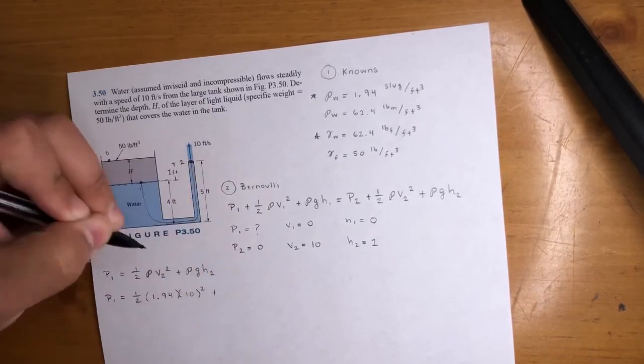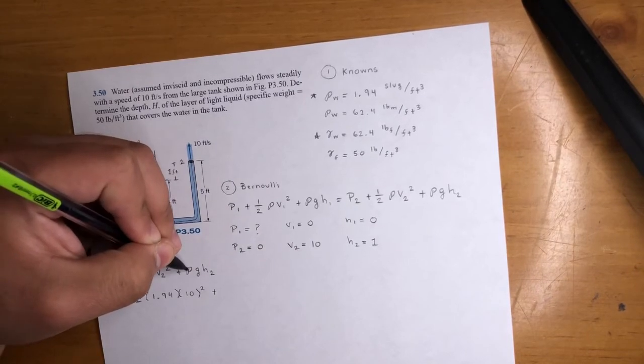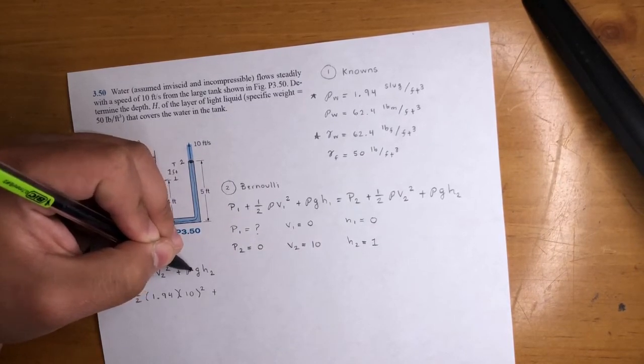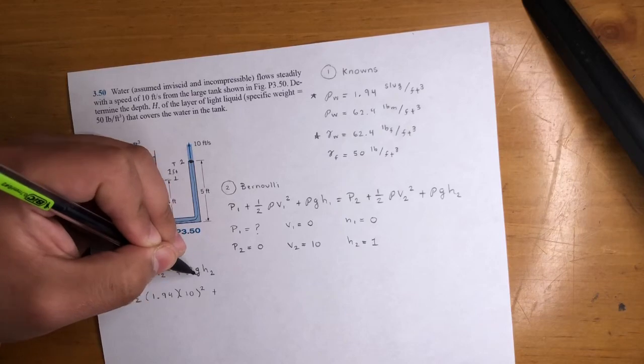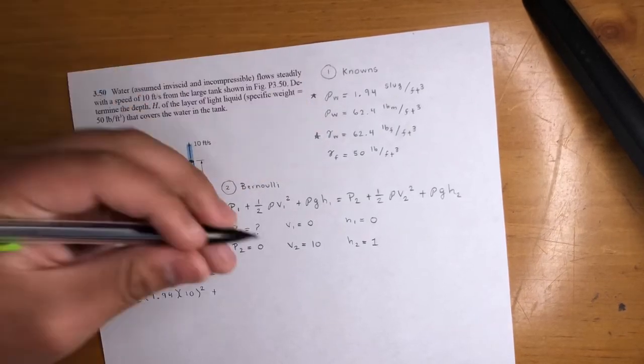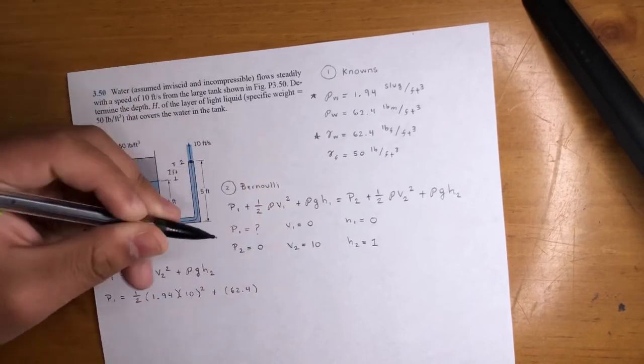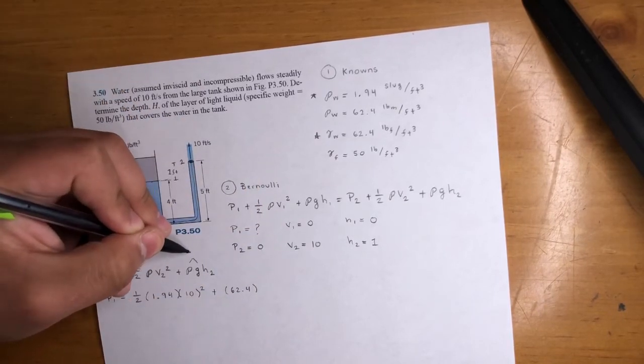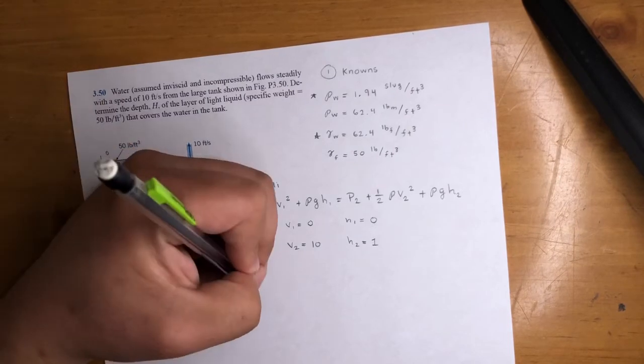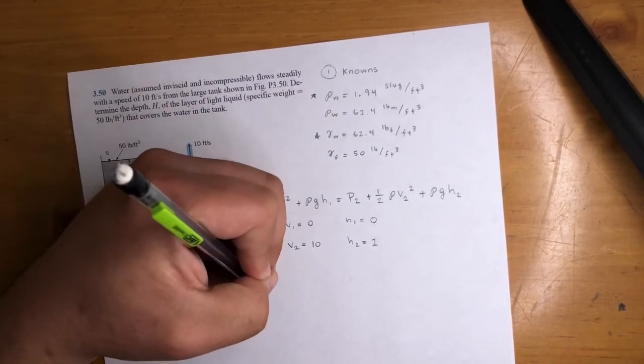So V2, that's 10 squared, right? Plugging in numbers plus. Now, density, again, I could use a 1.94 and then plug in gravity 32.2, or I could just use the gamma of water. That is 62.4 because these two are gamma, okay? Times height, and that's just one. Right? So you do the math here.